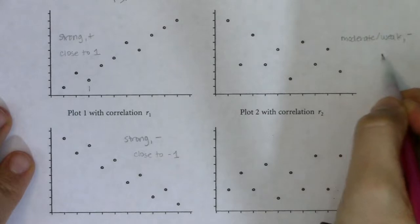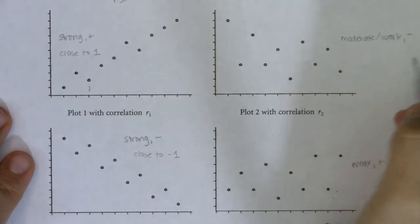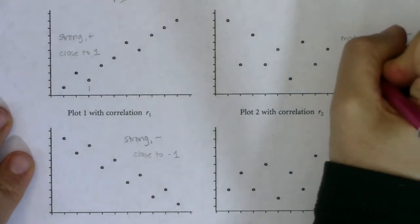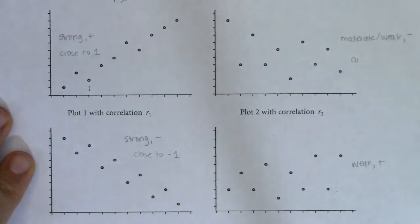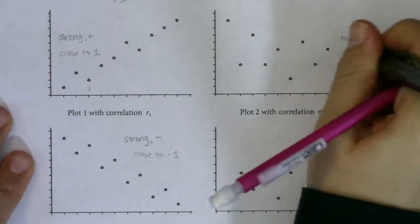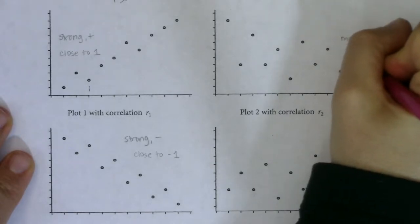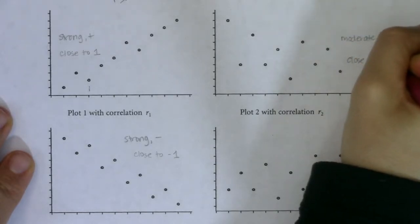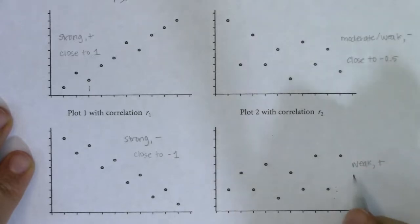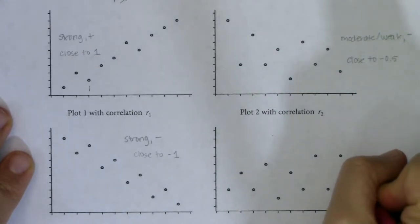If this is moderate slash weak, but negative, this is going to be close-ish. Oops, can't spell close correctly. I'll split the difference and just say this is close to maybe negative 0.5. And if this is weak and positive, we're getting closer to zero.